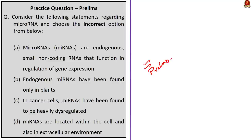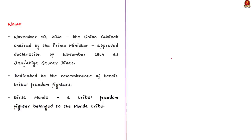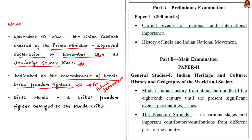The next news article discusses the role of tribal communities in the struggle for independence. On November 10th, 2021, the Union Cabinet, chaired by the Prime Minister, approved the declaration of November 15th as Janjatya Gaurav Divas. This day is dedicated to the remembrance of heroic tribal freedom fighters so that future generations will be aware of their contributions. Several tribal communities including Santals, Tamars, Coles, Beals, Qasis, and Mesos contributed to India's freedom struggle. Birsa Munda, a tribal freedom fighter belonging to the Munda tribe, played a key role in raising awareness among the tribal people. We will discuss Janjatya Gaurav Divas and Birsa Munda's contributions.